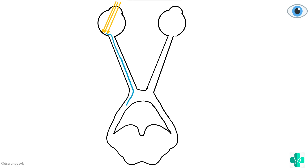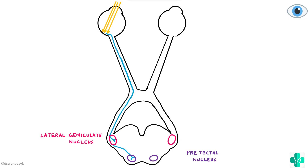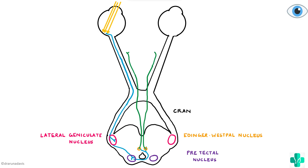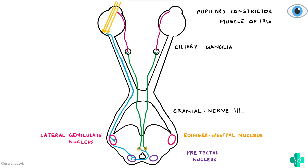When light is shown, impulses arise from the optic nerve, pass through the optic chiasm, go to the optic tract, and reach the lateral geniculate nucleus. From the lateral geniculate nucleus, fibers move on to the pre-tectal nucleus. From the pre-tectal nucleus, this information passes on to the Edinger-Westphal nucleus, which is a special nucleus of the oculomotor nerve. From the Edinger-Westphal nucleus, via the oculomotor nerve, it reaches the ciliary ganglion, and from there the post-ganglionic fibers reach the pupillary constrictor muscle of the iris.